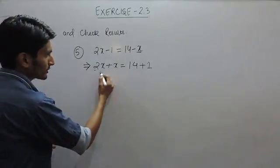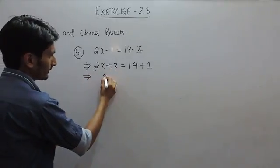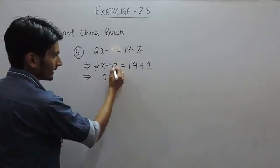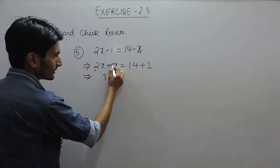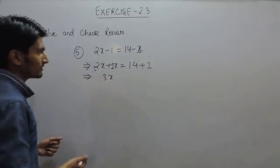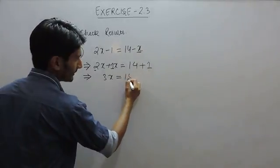So this is all positive, so solving this will become 2 plus 1 is 3x, because here nothing is written is considered as 1. And this is 14 plus 1 is 15.